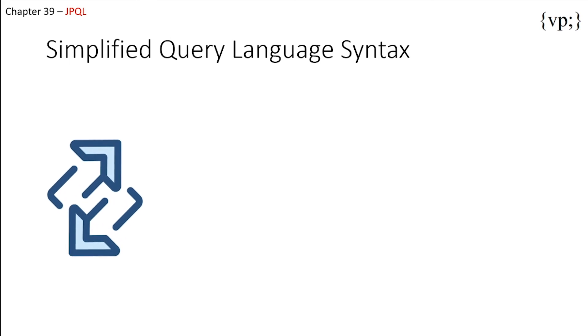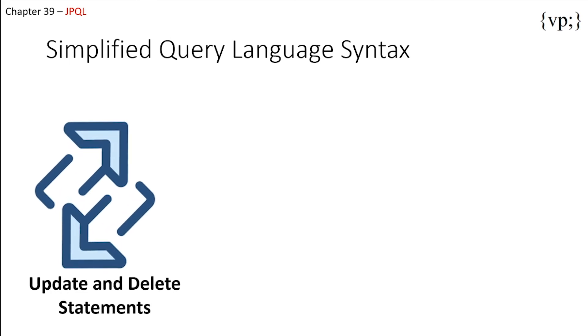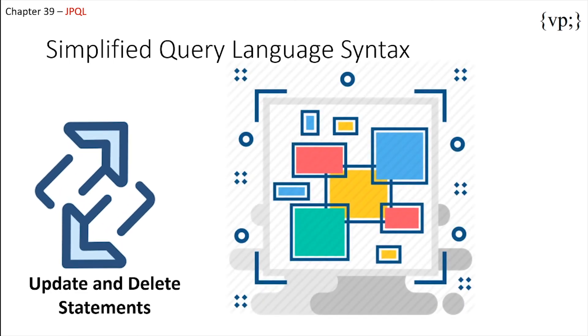The update and delete statements are also important. These statements actually change the data in the database, instead of selecting and returning data — they modify what's stored in the database. And that's all there is about Java Persistence Query Language. There are many more examples of queries, but those six SELECT statement clauses and the two update and delete statements are all you need to understand right now.